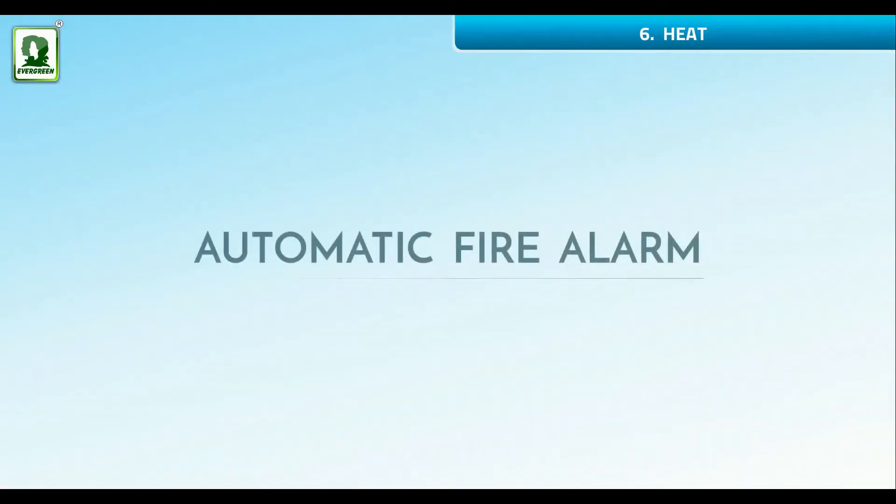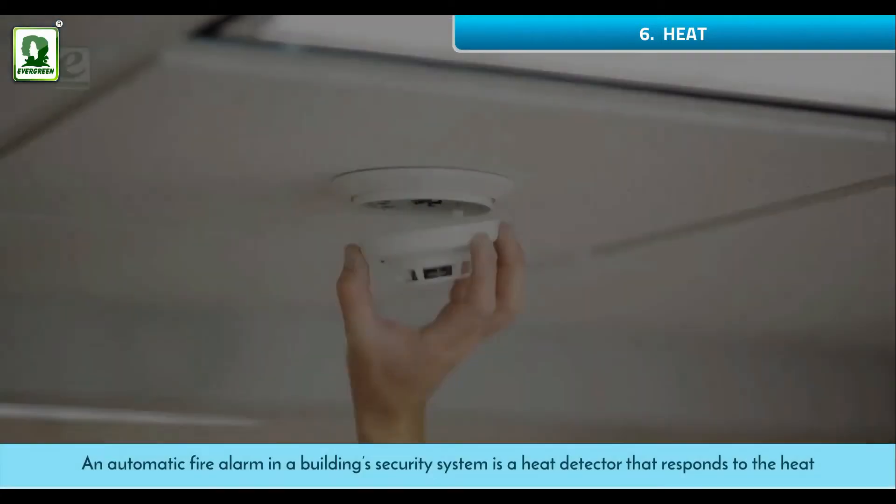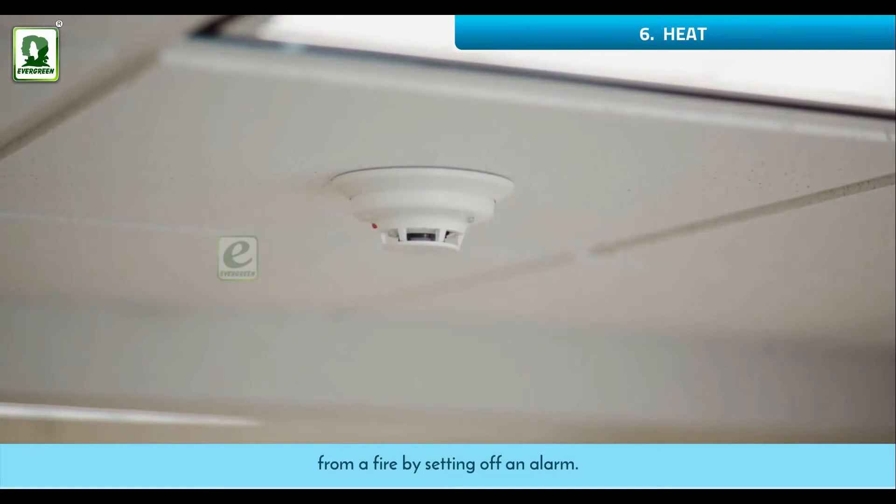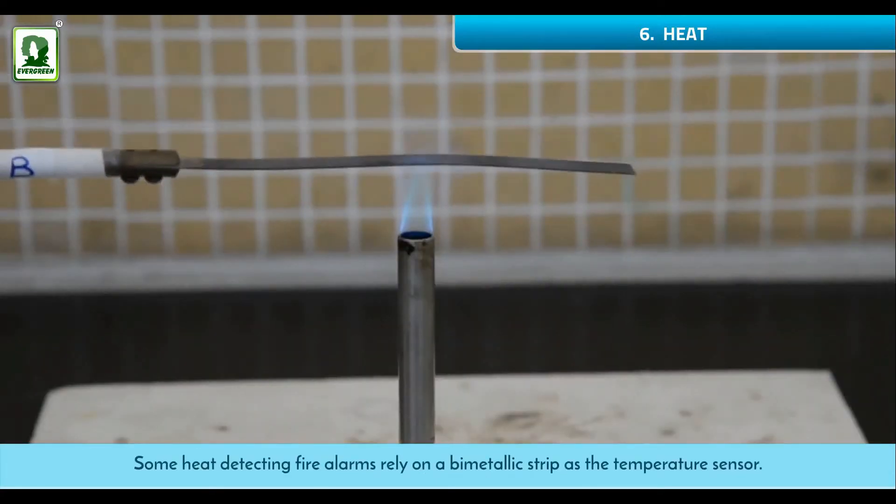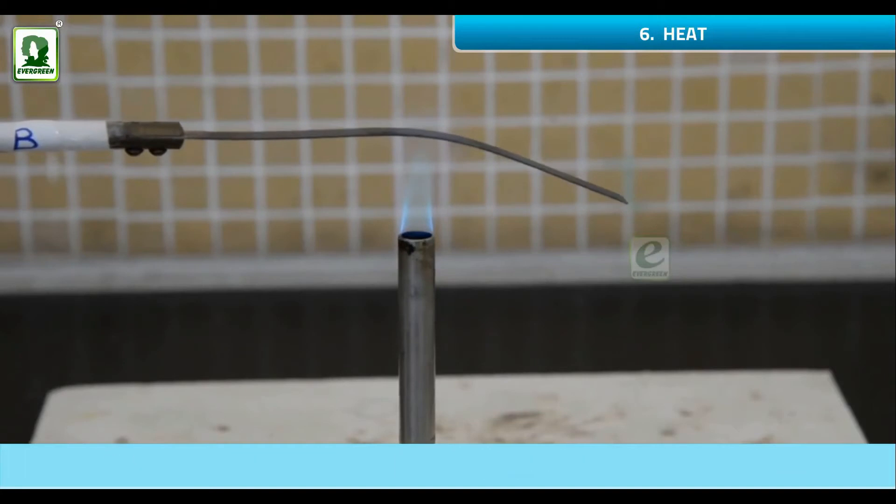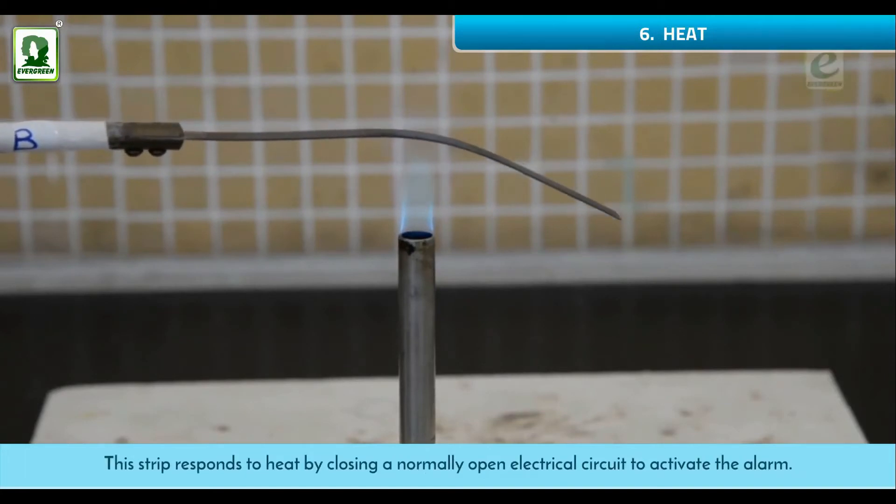Automatic fire alarm: An automatic fire alarm in a building's security system is a heat detector that responds to the heat from a fire by setting off an alarm. Some heat detecting fire alarms rely on a bimetallic strip as the temperature sensor. This strip responds to heat by closing a normally open electrical circuit to activate the alarm.